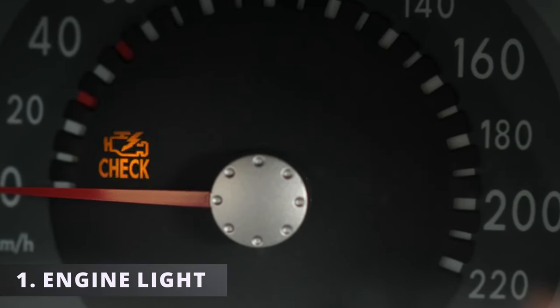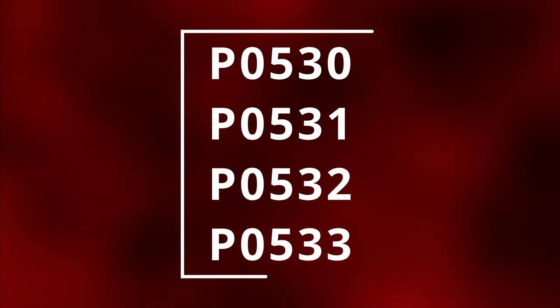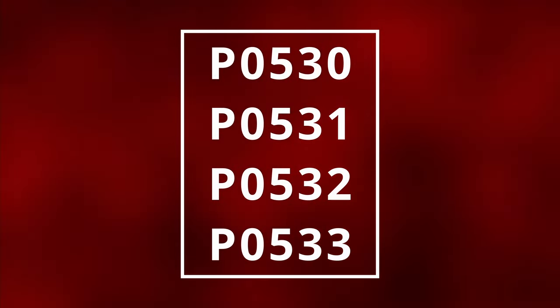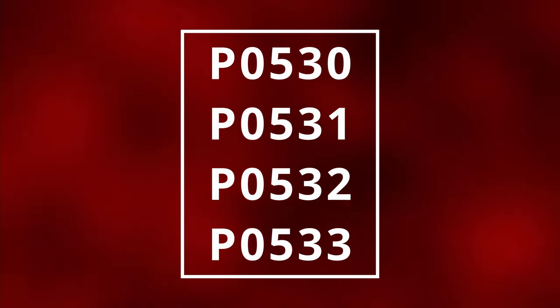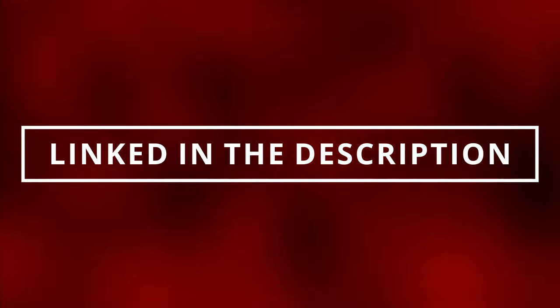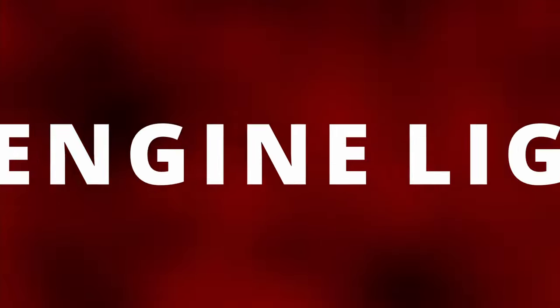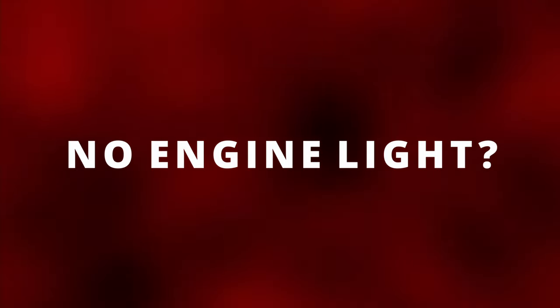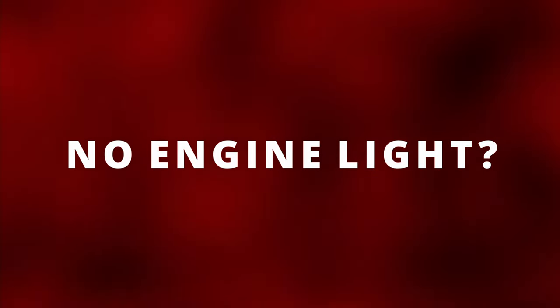The first symptom of a bad AC pressure switch is having your check engine light on. If you have a faulty pressure switch, these codes may pop up. You can scan these codes by going to a parts store near you — they'll most likely do it for free — or you can buy the scanner linked in the description below. Note that you can still have a faulty pressure switch with no check engine light.